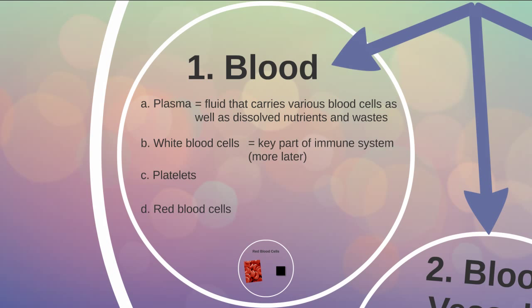White blood cells are a key part of the immune system, and we'll spend more time talking about those when we get to the immune system. Platelets are fibers that cause clotting. This is also going to be part of the immune system — they help speed immune response and create scabs to protect and heal damage.